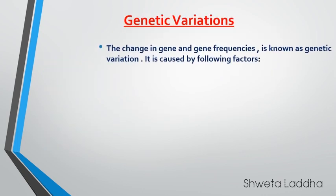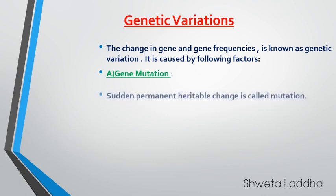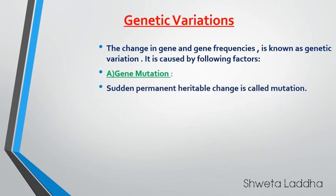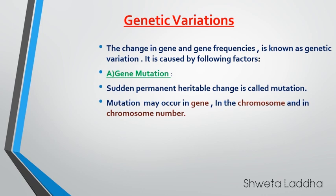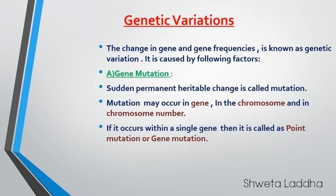Genetic variation — what is genetic variation? It is the change in a gene or gene frequencies, and this leads to genetic variation. It is caused due to gene mutations, recombinations, or chromosomal aberrations. What is gene mutation? A sudden, permanent, and inheritable change is called a mutation, which occurs in a gene, a chromosome, or a chromosome number. If it is occurring within a single gene, we call it a point mutation or gene mutation.